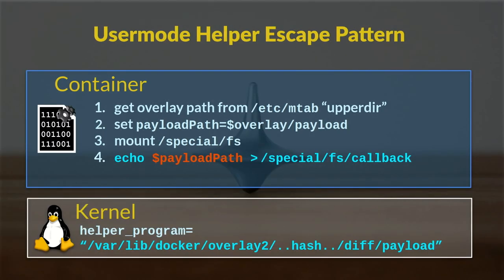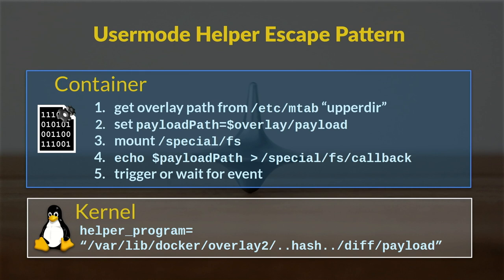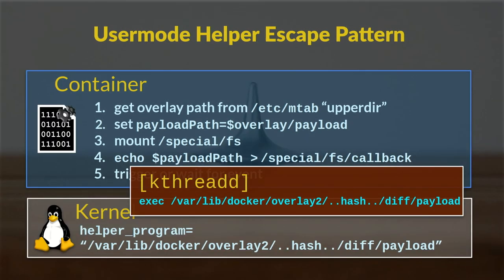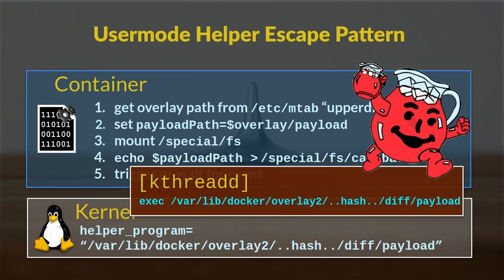Once we've echoed our payload into the callback file that specifies what should be called when the event takes place, the kernel knows who to call when it needs help. With the kernel aware of our payload, we can either trigger the event or wait for it to occur. When it does, kthread will execute whatever helper program was mapped to that event — thus the container is escaped and the in-container payload is now running as root on the host. This pattern can be used in many scenarios where you have some sort of crack in the container security model, from sensitive mounts to kernel exploitation.